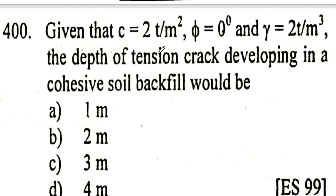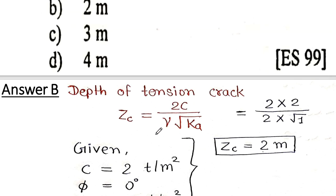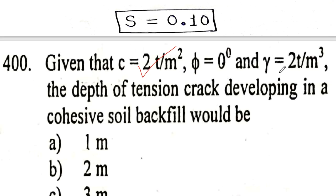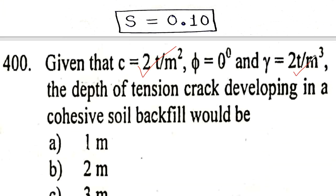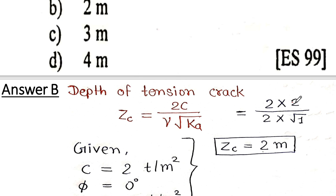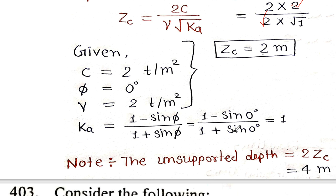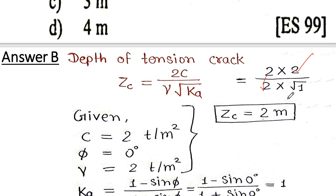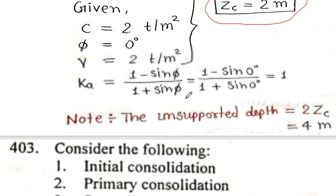The depth of tension crack formula is Zc equals 2c divided by (γ × √Ka). Here c equals 2, φ equals 0, and γ equals 2 ton/m³. Since φ is 0, Ka equals (1 − sin0)/(1 + sin0) equals 1. So Zc equals 2×2 divided by 2×1, giving depth of tension crack as 2 meters.